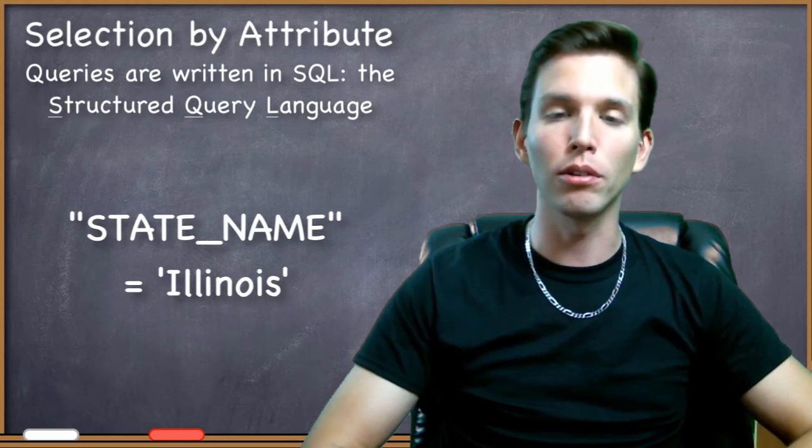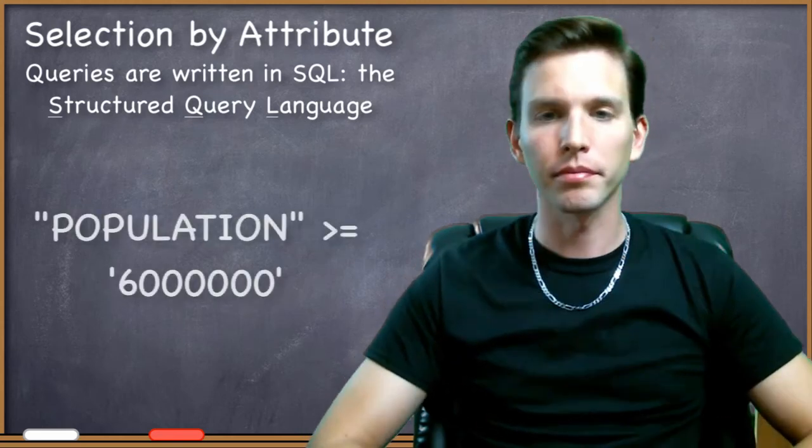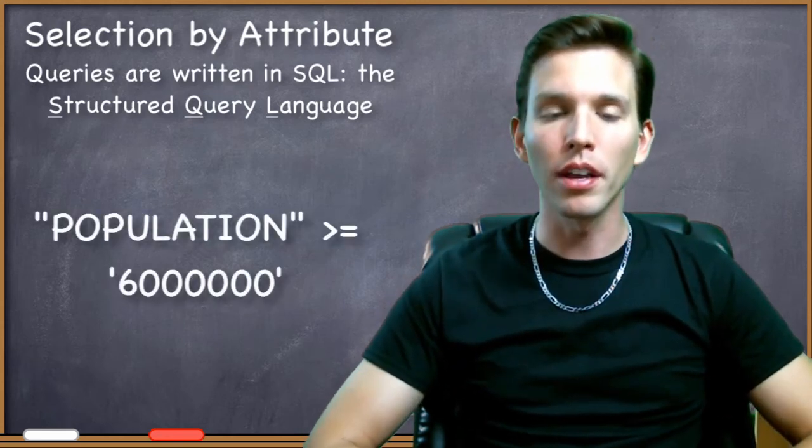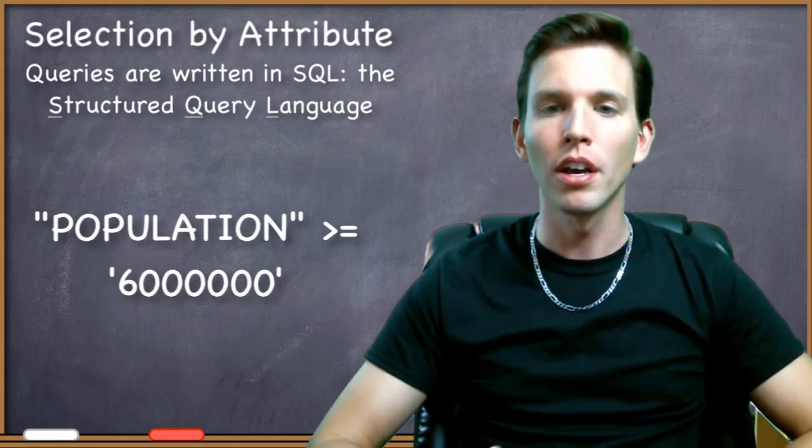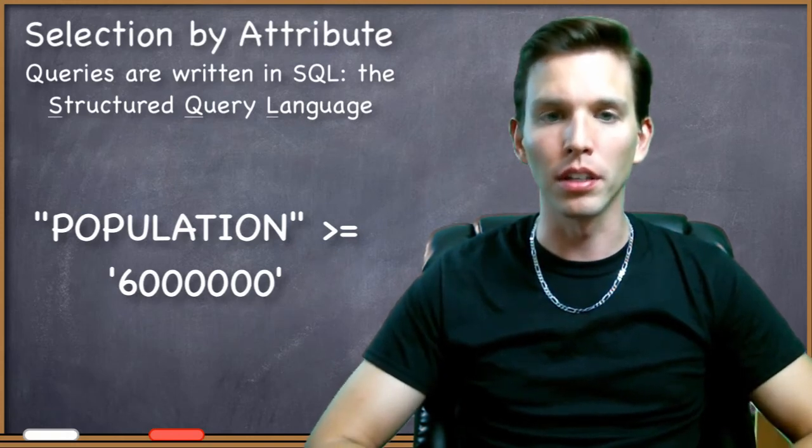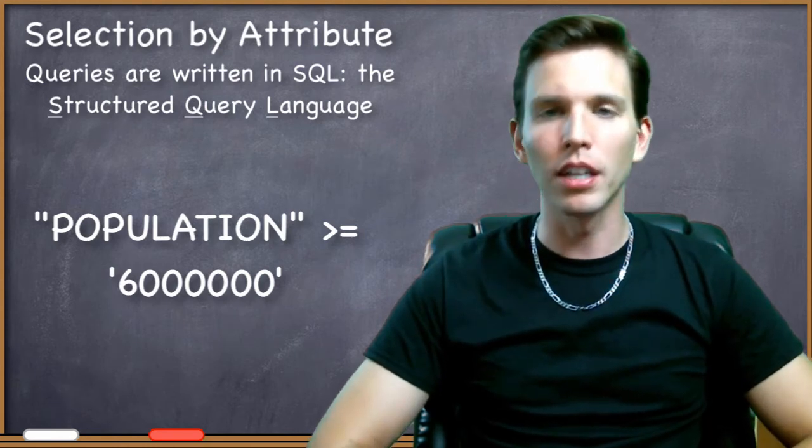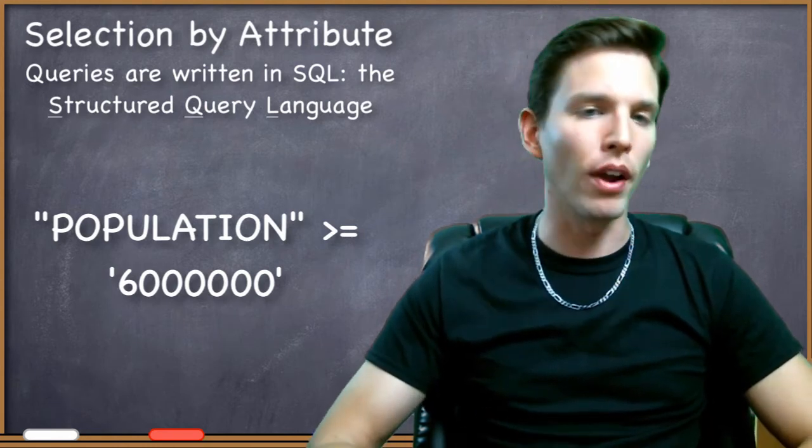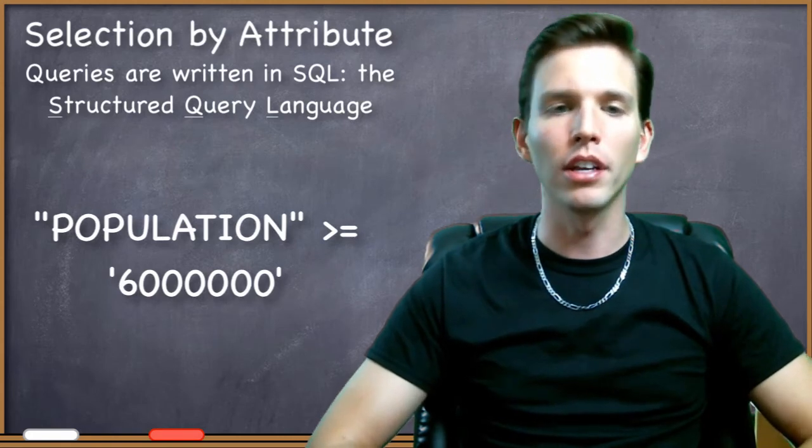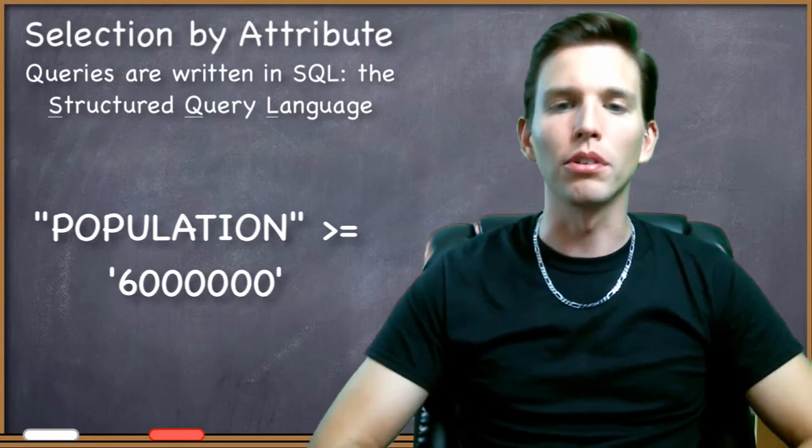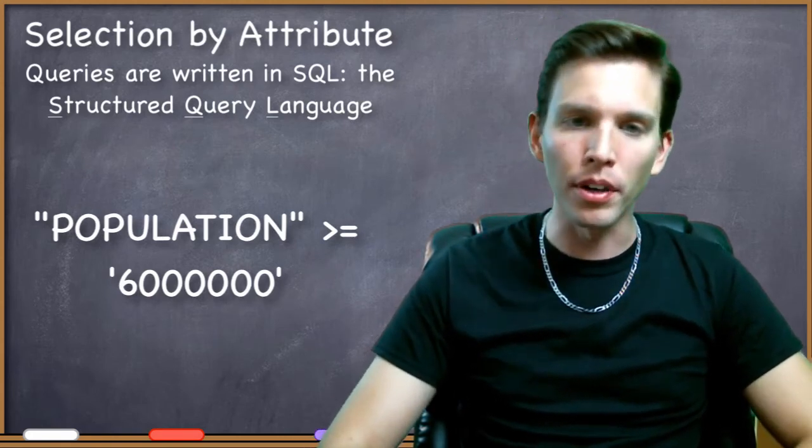Then I could just type in the query: population in double quotes greater than or equal to six million in single quotes. SQL recognizes all of the standard inequality operators such as greater than, less than, greater than or equal to, and less than or equal to.